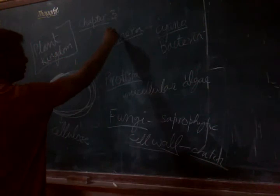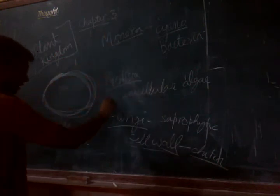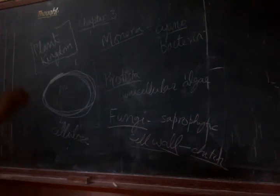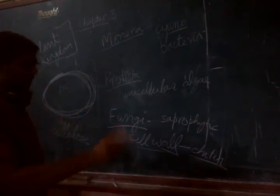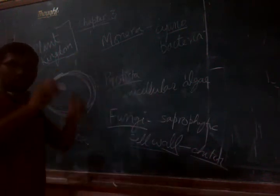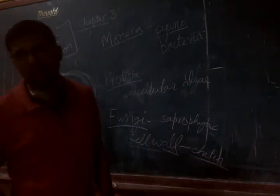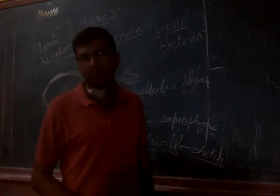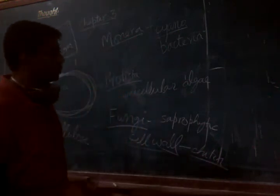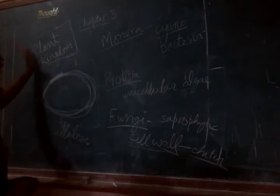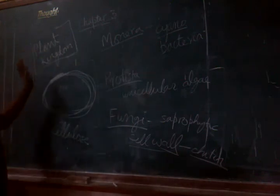Many of the old members of kingdom Plantae are included in the other kingdoms — Monera, Protista, and Fungi. So which of the five kingdoms does not have any member from the old kingdom Plantae? That would be kingdom Animalia — none of the organisms from the old kingdom Plantae have been moved to kingdom Animalia.